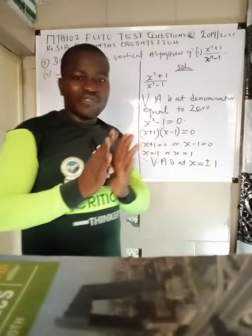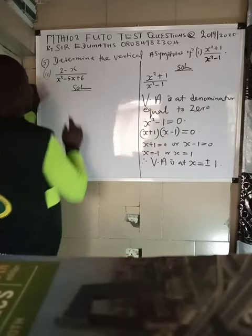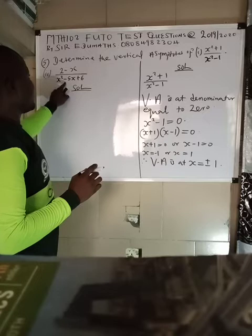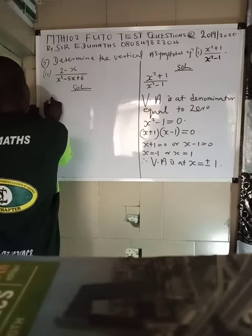So vertical asymptote is opposite of domain of a function. Now let us forge ahead to the second question. The second question asked us to evaluate this. If you check this one, we are going to first of all factorize this to check whether something can cancel before we now solve. Always solve whenever you have checked for factorization.